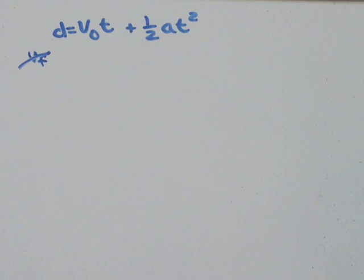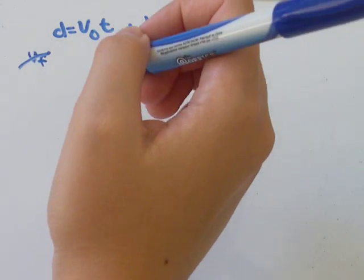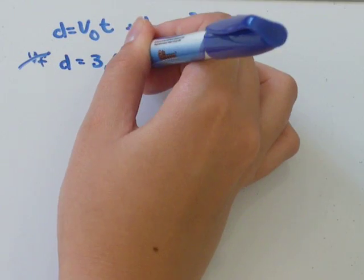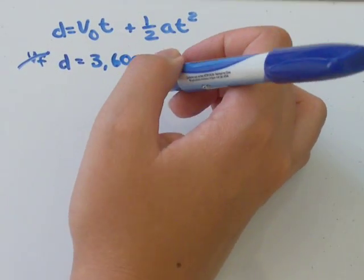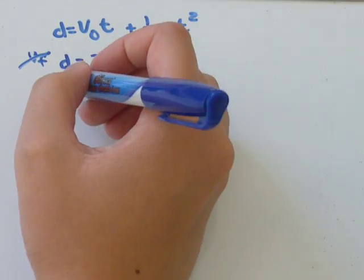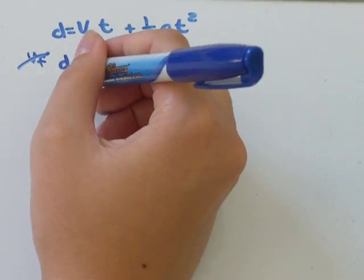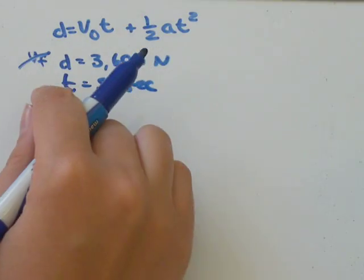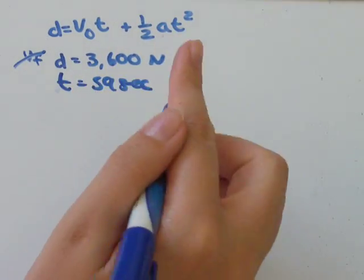So I'll read the question out to you. We have an object's displacement is 3,600 meters in the north direction. That displacement happens over 59 seconds. The object started from rest. What is the acceleration?